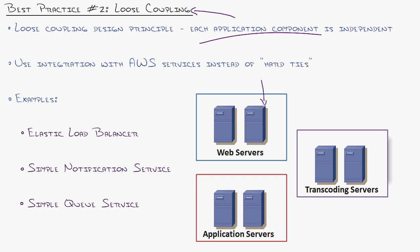You don't have hard ties in your web server saying, go specifically to this application server by IP address or by that name, because as soon as you do that, that hard tie might break. So instead, you can use integration with AWS services. For example, maybe send your web servers to something like an Elastic Load Balancer, which is redundant by design and then can distribute it to however many application servers or transcoding servers you have behind the scenes.